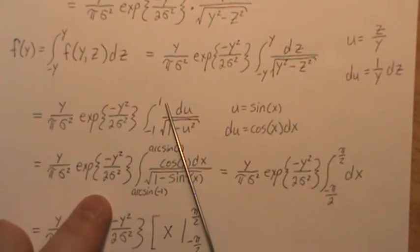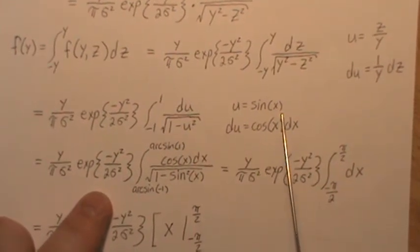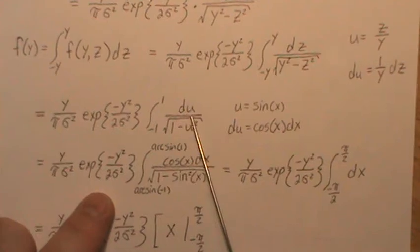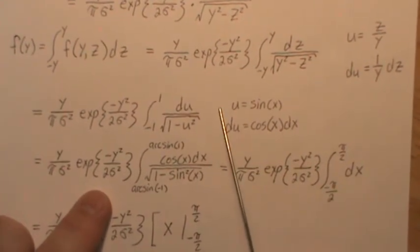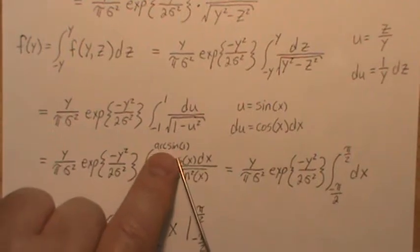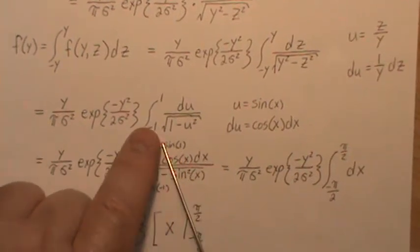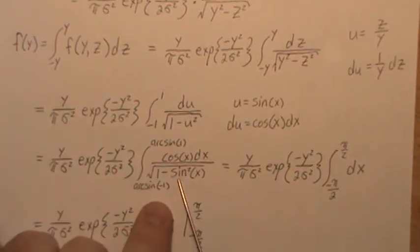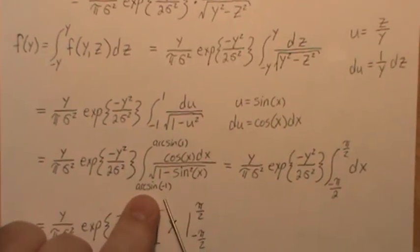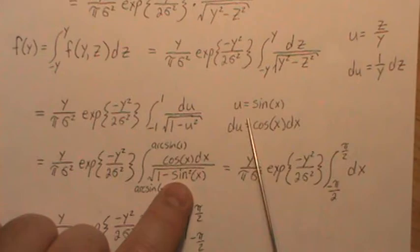But now look at the limits of integration. We have to put in, we're in the U world, so we have to put in a 1 here. And we have to take the arc sine to get it to the other side. So that's why it's the arc sine of 1. And we plug in minus 1 here, take the arc sine. That's why it's arc sine of minus 1.